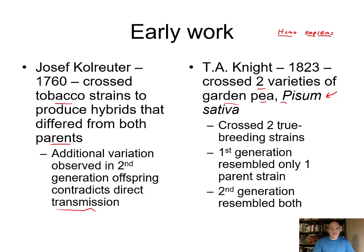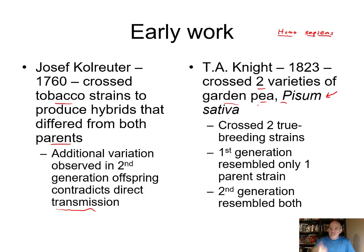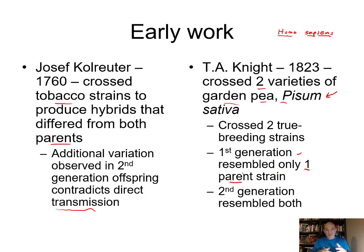T.A. Knight in 1823 crossed two true-breeding strains of garden pea. True breeding means that every generation when you pollinate and they produce seeds, all offspring continue to look exactly the same — they are pure-breeding strains. He looked at two that differed in some trait, such as flower color, crossed them, and found that the first generation of offspring only resembled one parent.